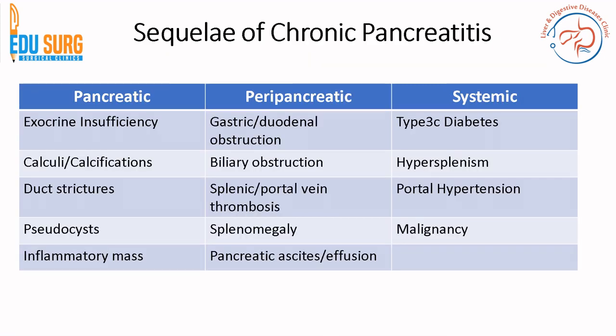The sequelae of chronic pancreatitis — and I do not call them complications — are termed sequelae because a patient with chronic pancreatitis will invariably develop most or all of these conditions if disease progression is not arrested by treatment. They are part of the natural history. Pancreatic sequelae include exocrine insufficiency, ductal strictures, pseudocyst or inflammatory mass formation, gastric or duodenal obstruction, biliary obstruction, splenomegaly, and pancreatic ascites or effusion. Systemic sequelae include endocrine insufficiency, hypersplenism, and malignancy.